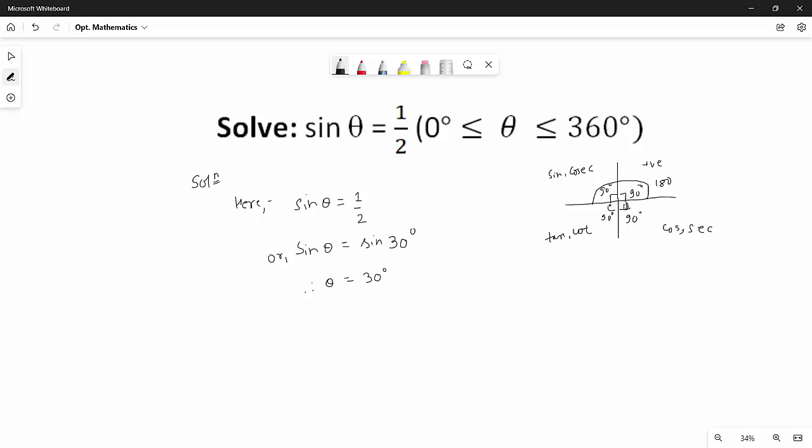They become 360°. And so since sine is positive in the second quadrant, we can also write it as 180° - 30° equals...